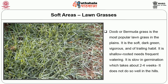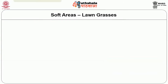Doob or Bermuda grass is the most popular lawn grass in the plains. It is soft, dark green, vigorous and of trailing habit. It is shallow rooted and needs frequent watering. It is slow in germination, taking about 2 to 4 weeks, and does not do well in the hills.